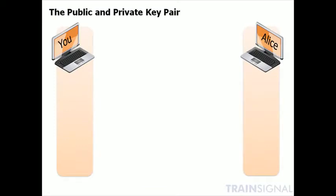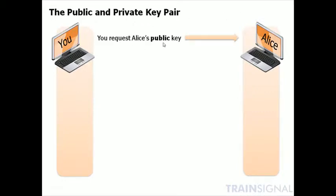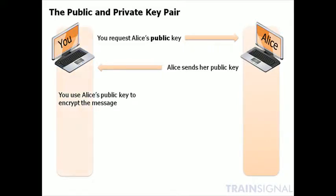Let's say you want to send a secure message to Alice. Alice has a key pair — a public key and a private key — and those two keys are mathematically related. They were created by a special algorithm at the same time. You request Alice's public key. Now that's public, meaning anyone can see it, anyone can have it, so she sends it to you. Then you use that public key to encrypt the message you want to send to Alice, and you send it back.